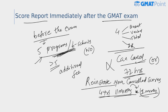Before canceling your scores, determine whether you will retake the GMAT or submit your official score report to your chosen graduate business programs. If you're not satisfied, you can decide immediately whether to cancel. If you decide to cancel after your GMAT, you can do so within 72 hours for a fee of $25. You can also reinstate canceled scores for an additional fee of $50.